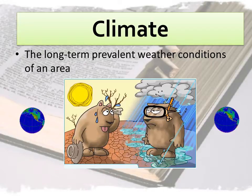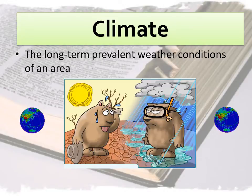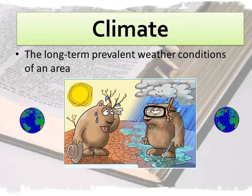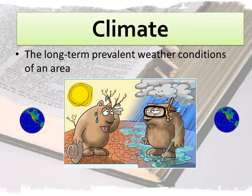Climate is a word you've probably heard before. A lot of people think climate and weather mean the same thing. They're connected, but they're not the same. Climate refers to the long-term, prevalent, or general weather conditions of an area. It can include temperature, rainfall, humidity, wind, and other weather conditions, and can change by season.